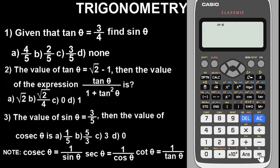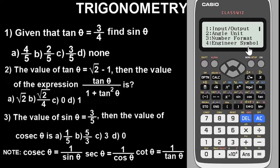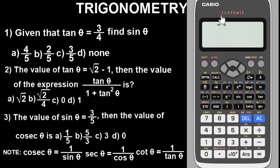It has to be in radian, not degree. Whenever the calculator is in default mode, it is usually in degree — you can see the capital D stands for degree. To move it from degree to radian, simply press Shift, then the setup button, then select angle units, press option 2. Radian is option 2. It is now in radian — you can see the capital R here. It has changed from D to R. We are now in a good position to begin solving the questions.